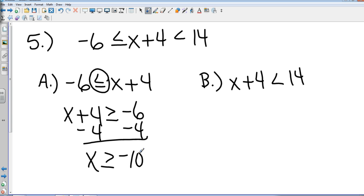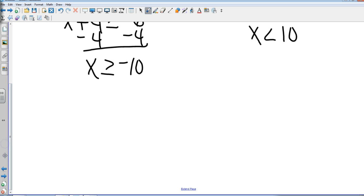Okay. Now, pretty simple. Letter B is already in order for us. So we just do what to both sides? Subtract 4. So x is less than 10. Alright. Now it's pinched in together. So there are two ways you can write this answer. You can write it x is greater than or equal to negative 10 and x is less than 10.